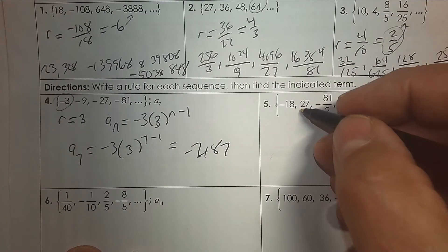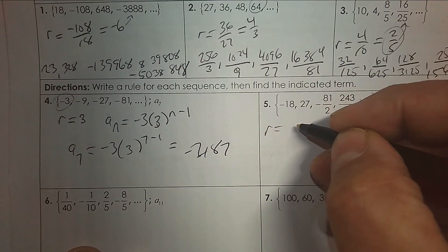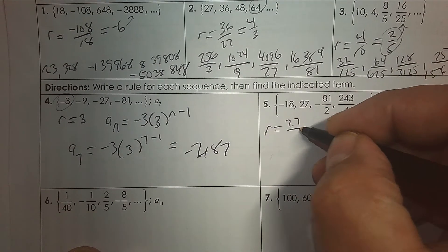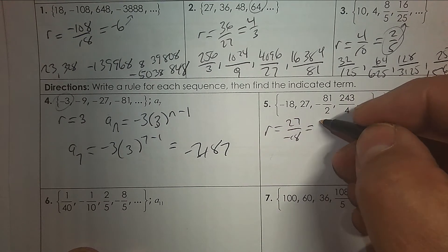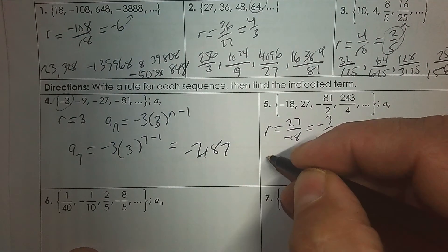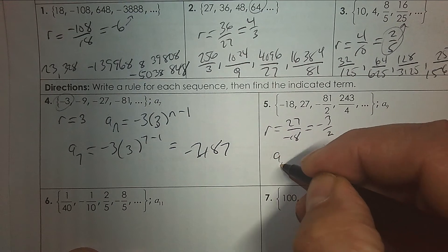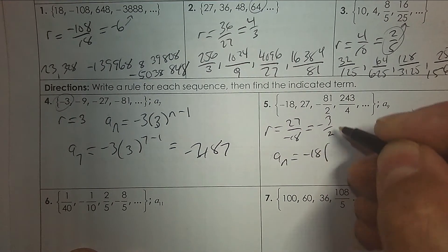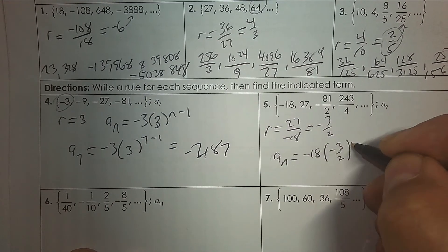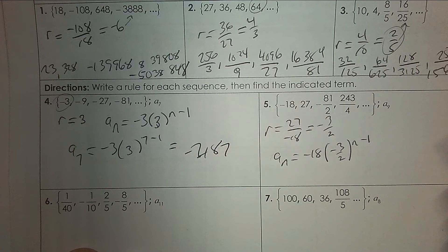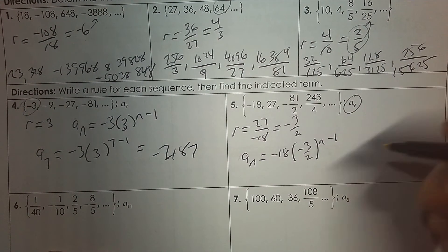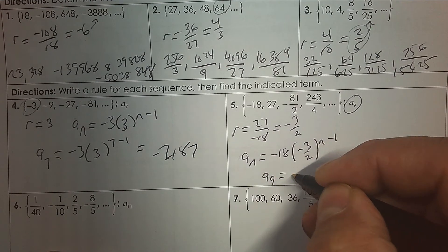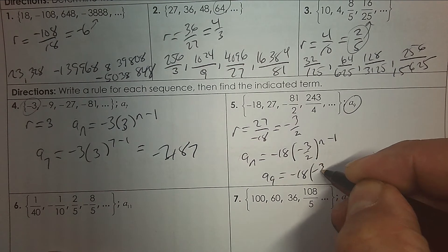Take two consecutive terms to find the ratio — it's okay to reduce it down. Dividing by 9 gives negative 3 over 2. The rule is: the first term, that's the base, to the exponent n minus 1. Plug in 9 and use your calculator to get your answer.